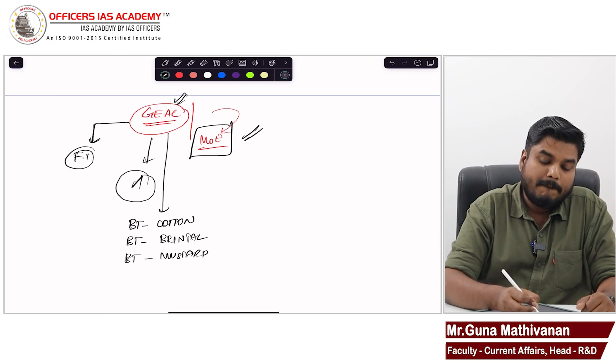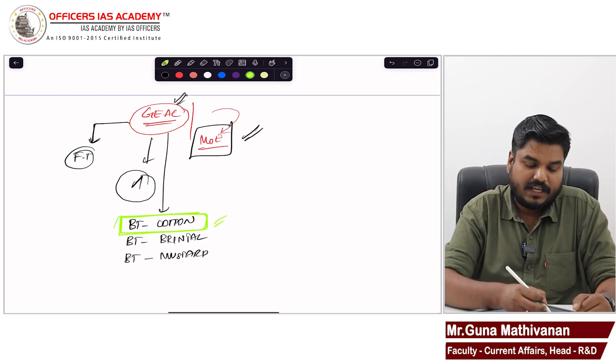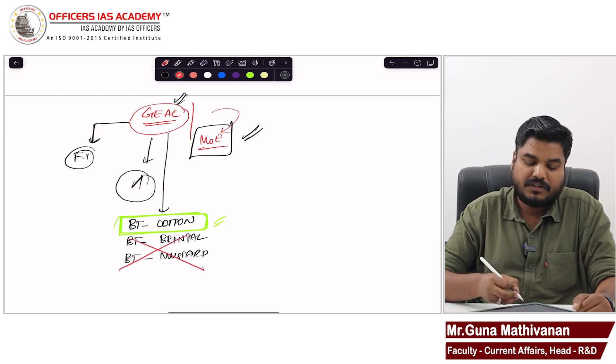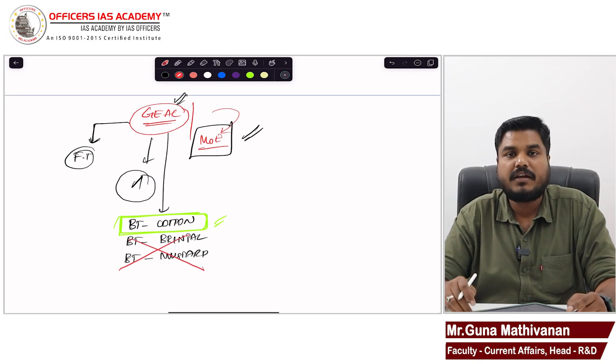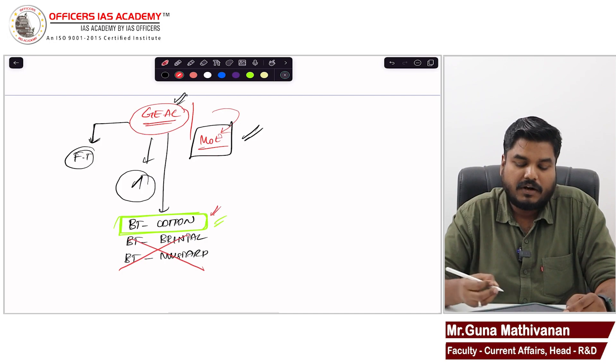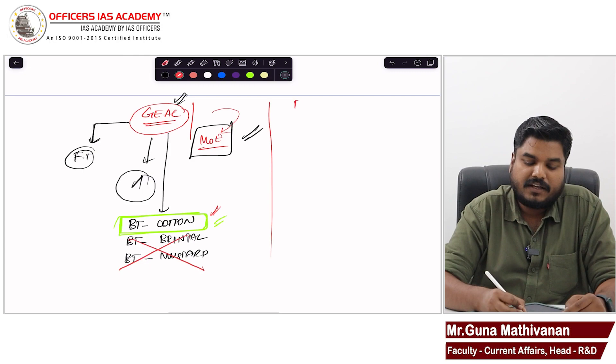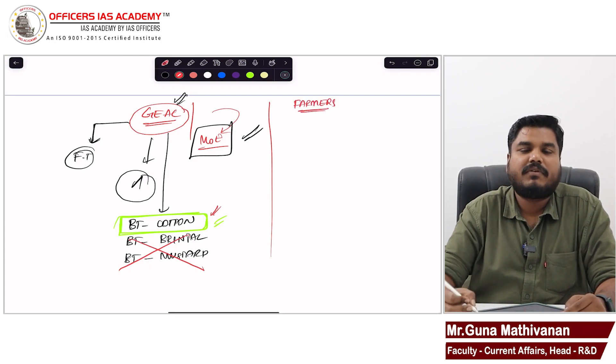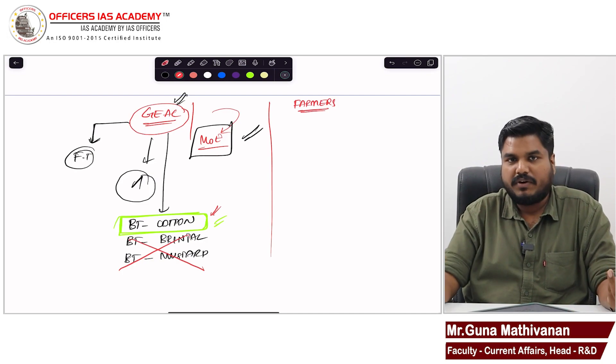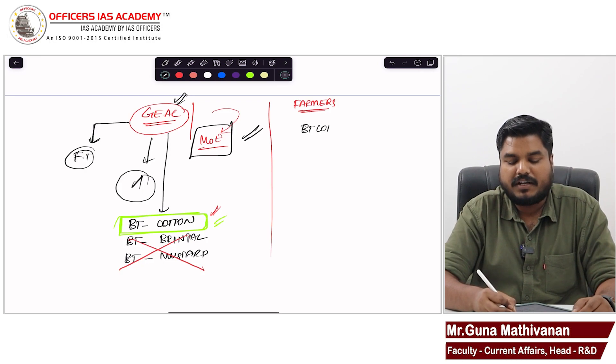Till date, this GEAC has approved Bt cotton, Bt brinjal, Bt mustard. But however, Ministry of Environment has given approval only for Bt cotton. So they have not given approval for Bt brinjal. Today, you cannot grow Bt brinjal or Bt mustard in India. You can grow only Bt cotton. Today, the farmers in India are facing a problem.